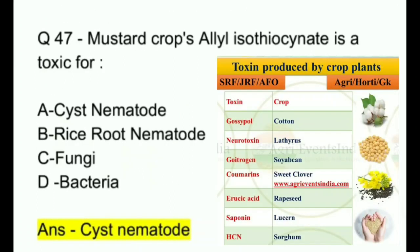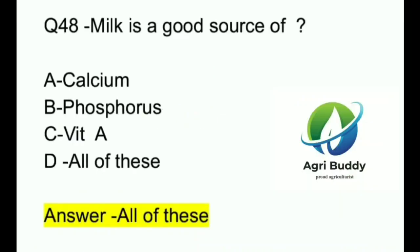Question 47. In mustard crops, isothiocyanate is toxic for? A. Cyst nematode. B. Rice root nematode. C. Fungi. D. Bacteria. And the answer is Cyst nematode.